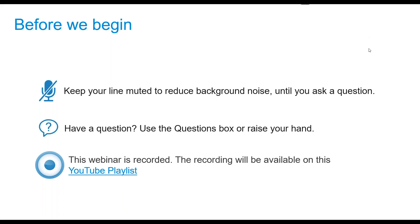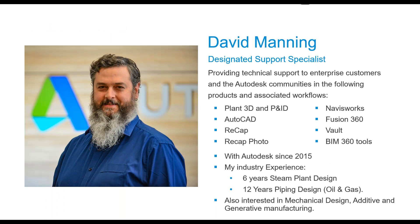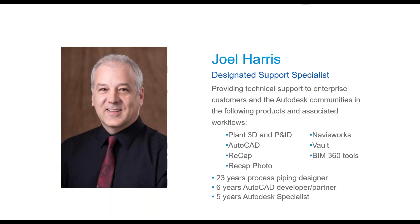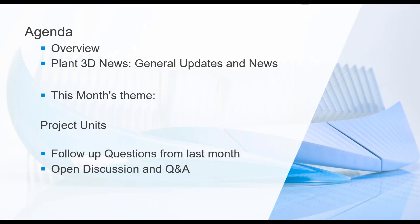This is Dave Manning, specialist primarily in Plant 3D and P&ID, but I also support AutoCAD, Recap, Fusion 360, Navisworks, and the BIM 360 suite. Today's agenda: we'll cover Plant 3D news, then the main topic — project units, when to use metric versus imperial, and how that affects your catalogs and specs. There will be time at the end for questions.